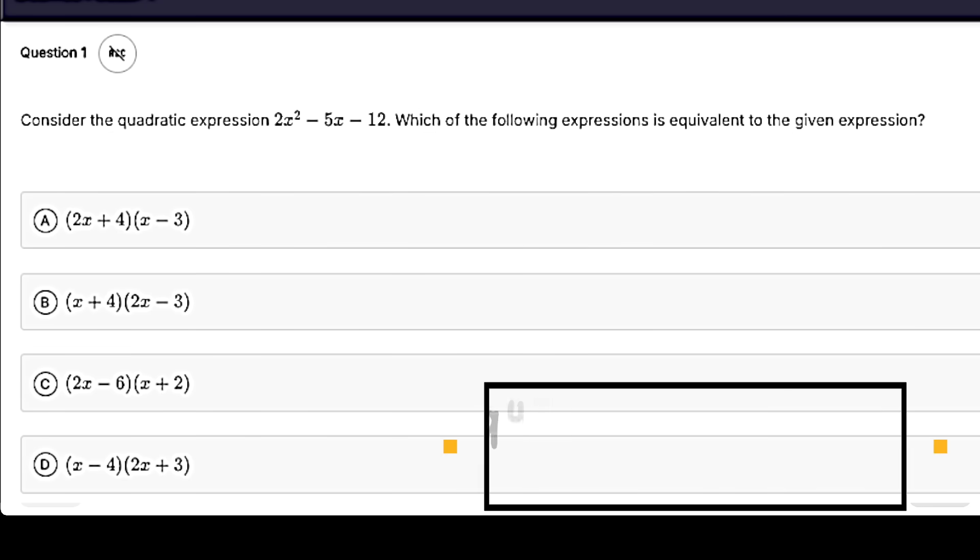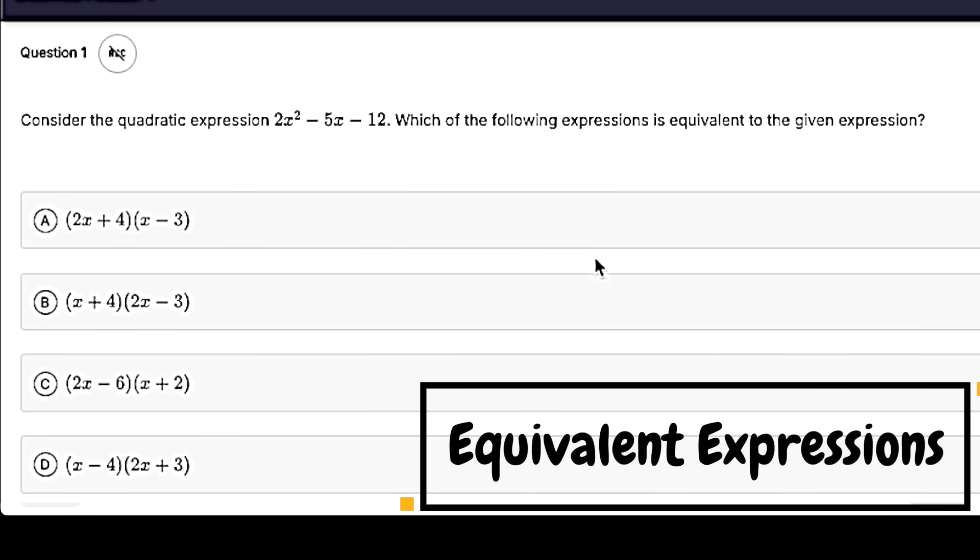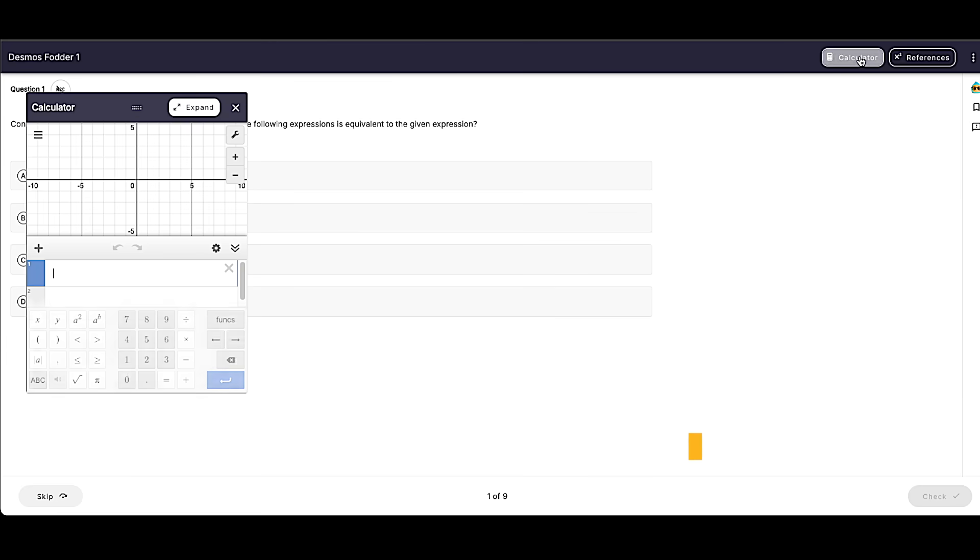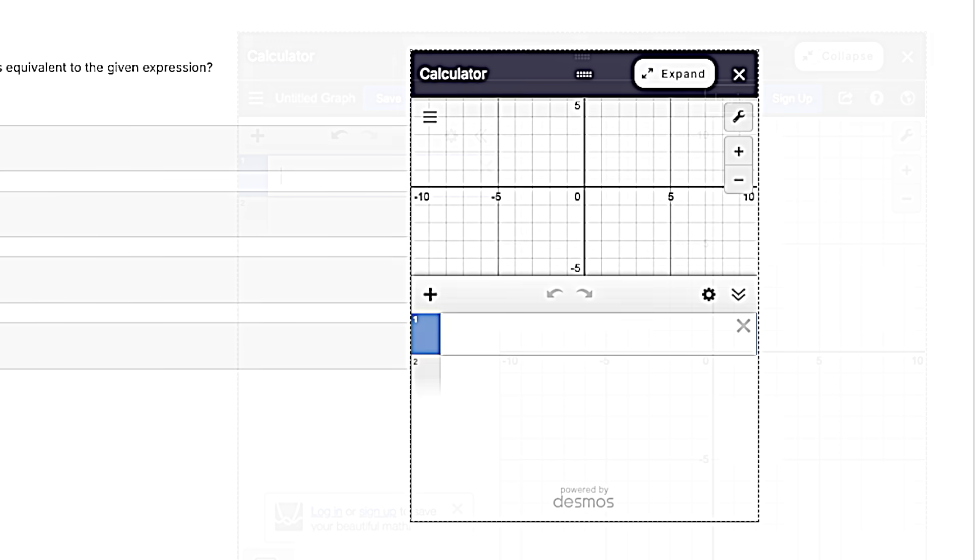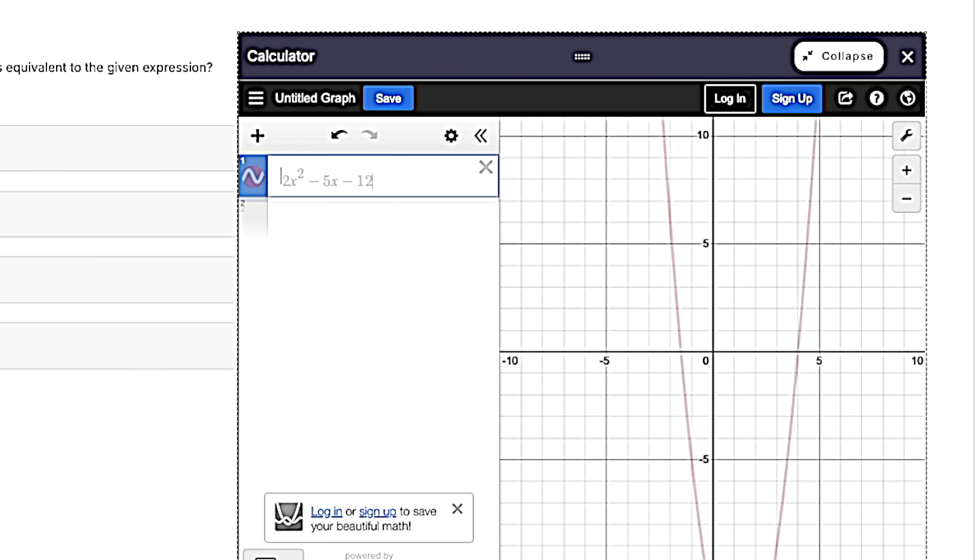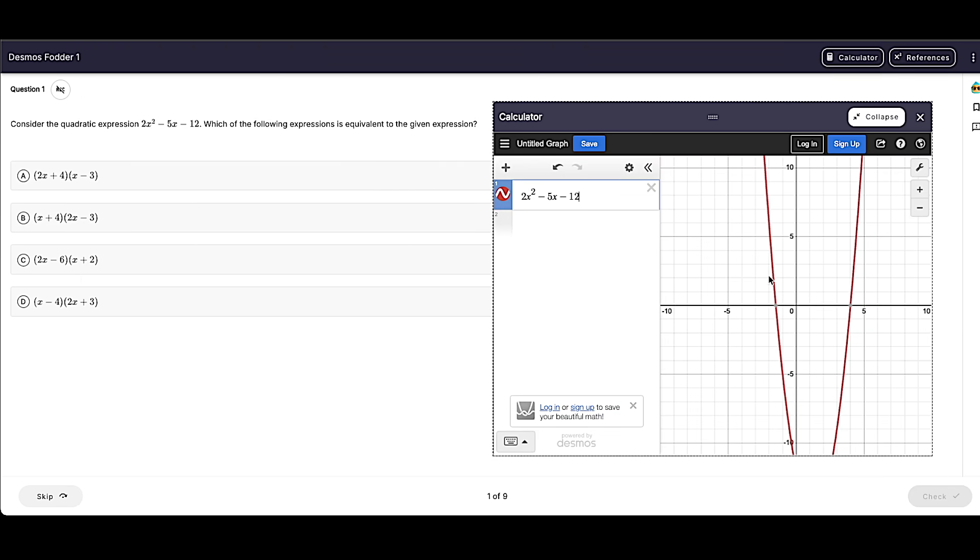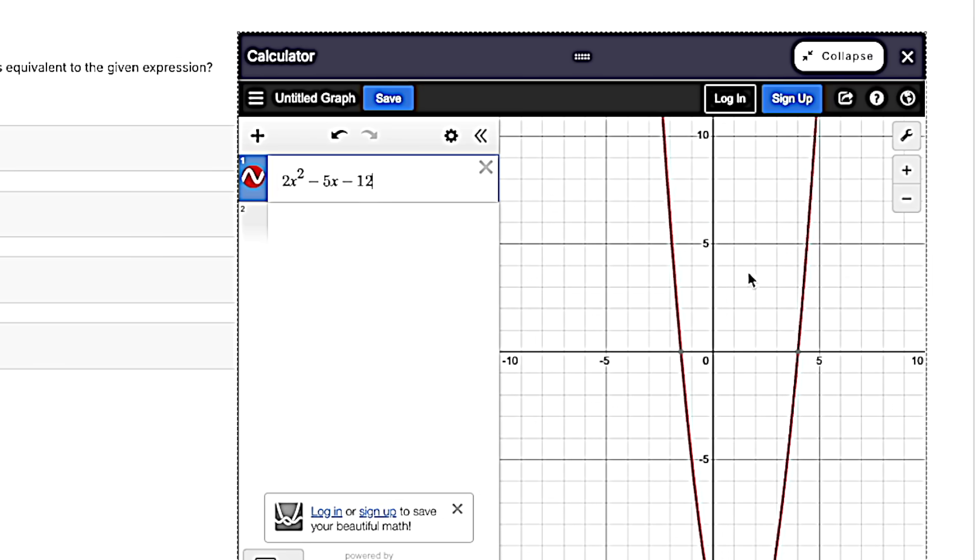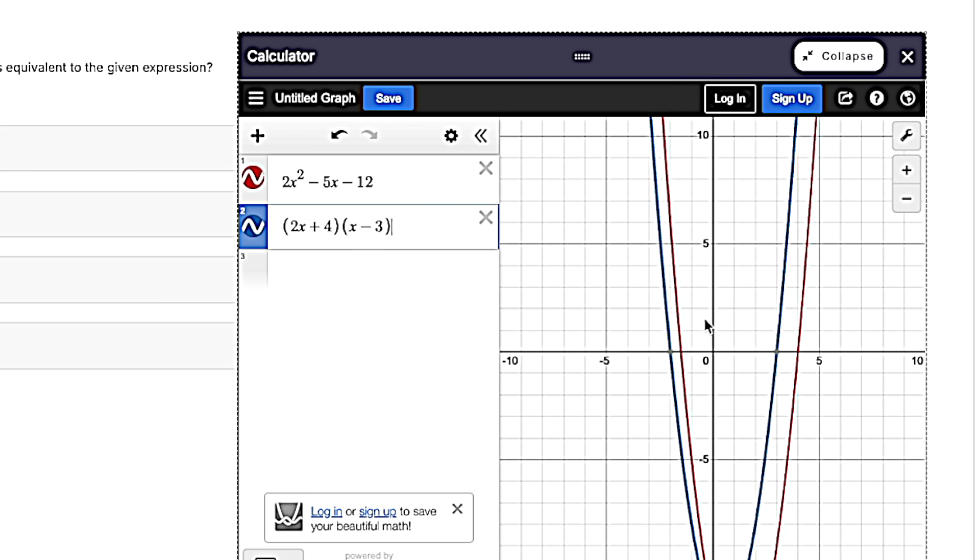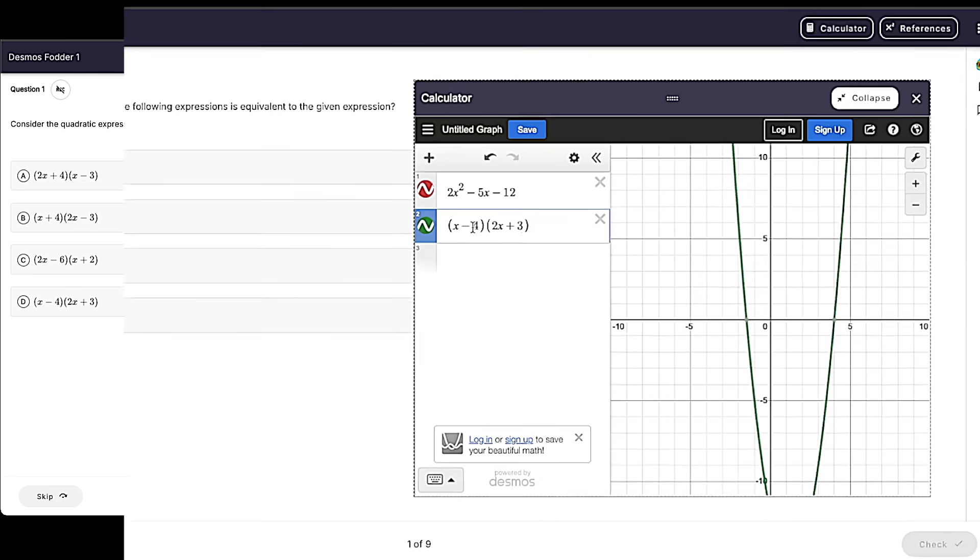If you're not sure how to factor or solve an equivalent expressions question, you can plug that into Desmos as well. First, plug in the initial expression. Then, plug in your answer choices, and you're looking for one that overlaps the graph that was made from the initial expression. So if we put in choice A, you're going to see these graphs do not overlap. But as you go down the line, you'll eventually get one that overlaps.